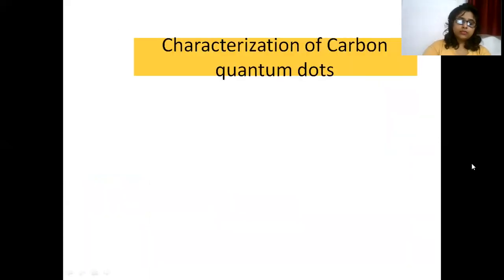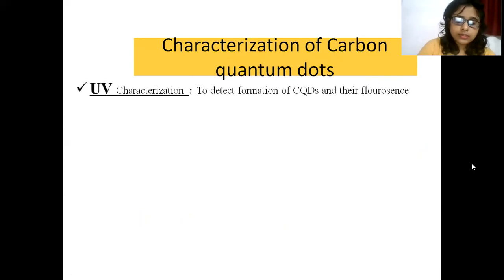Characterization of Carbon Quantum Dots is a crucial phase while synthesizing Carbon Quantum Dots. These techniques help us to know more about our prepared Carbon Quantum Dots. UV characterization helps us to detect the formation of Carbon Dots and their fluorescence.